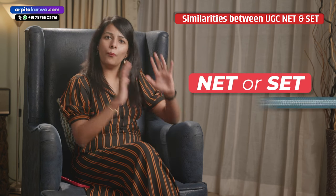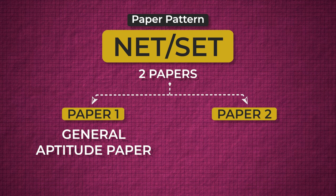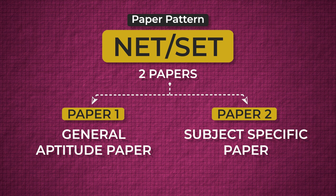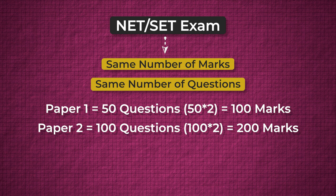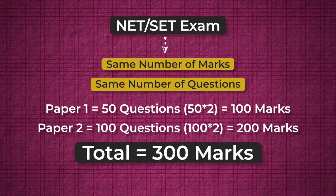Now let's discuss the similarities between NET and SET. If you have completed your master's, or if you are doing your master's and want to become an assistant professor or pursue a PhD, you have to give either NET or SET exam. Both exams follow the same paper pattern — both have Paper 1 and Paper 2. Paper 1 is a general aptitude paper; Paper 2 is a subject-specific paper. There is no negative marking in either exam. Paper 1 has 50 questions for 100 marks, Paper 2 has 100 questions for 200 marks, making the total exam 300 marks.